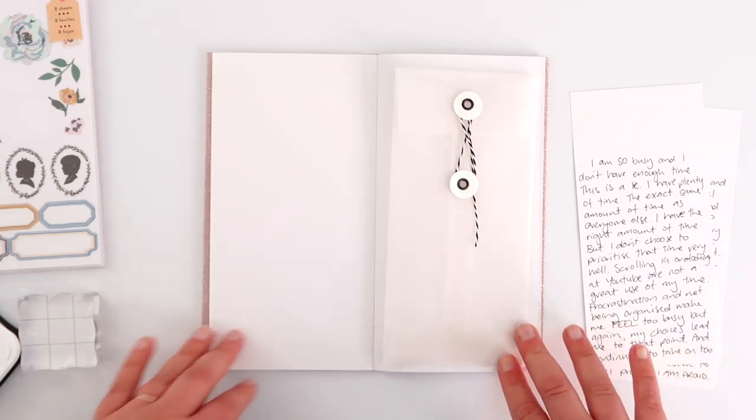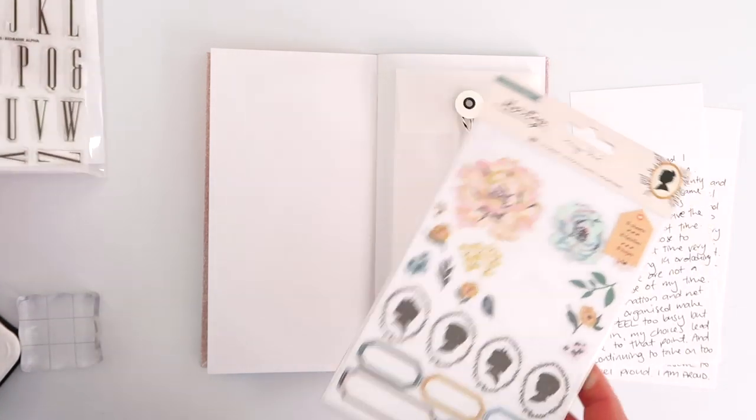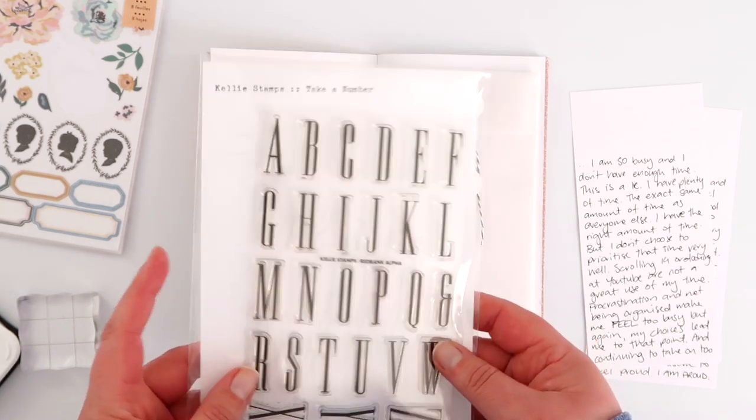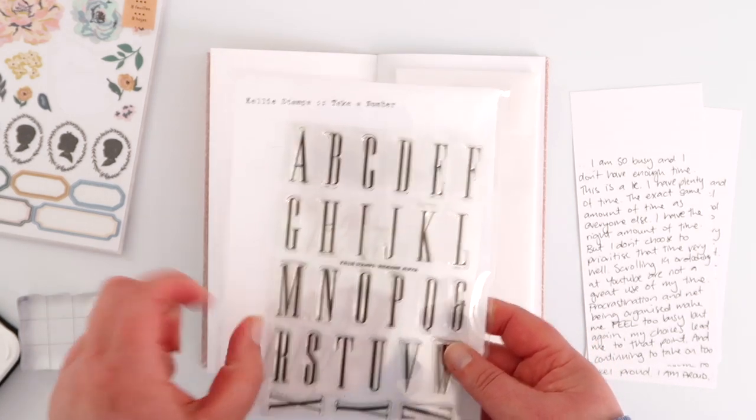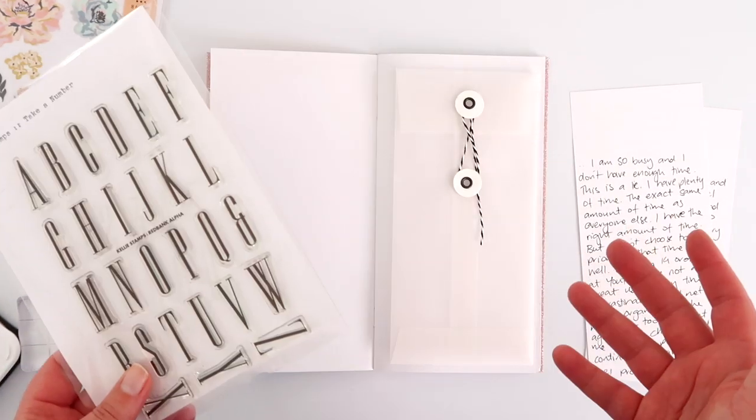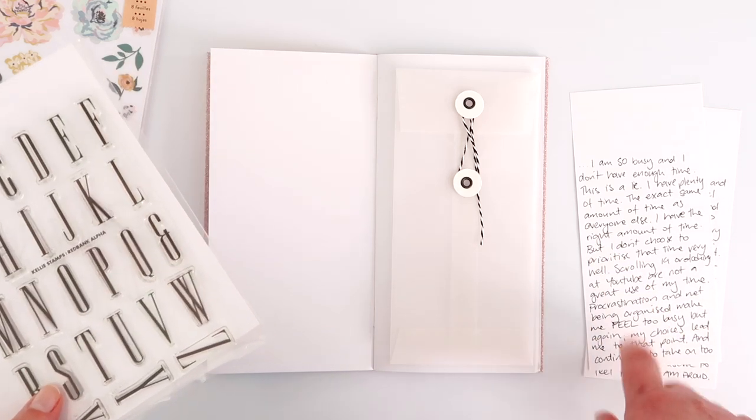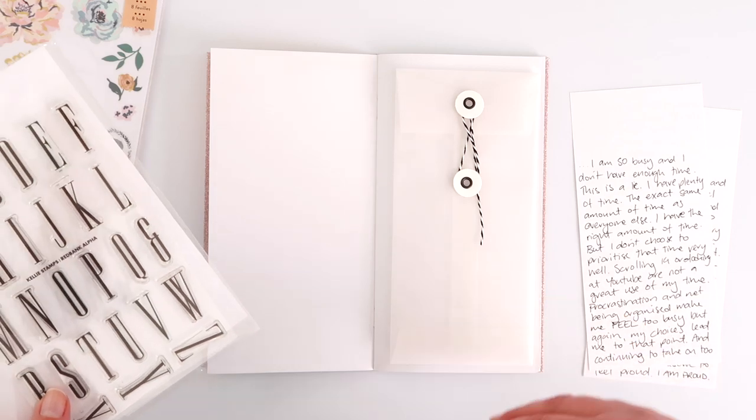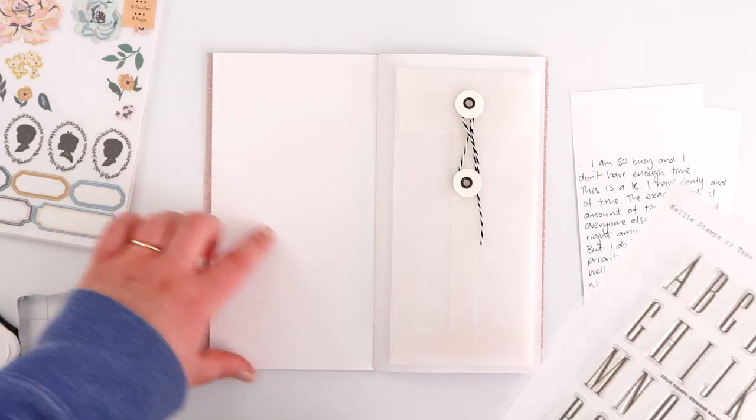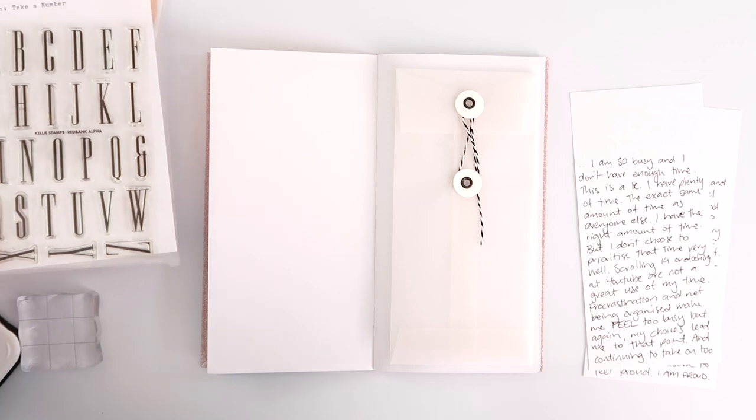So the rest of the page is going to be super simple. I might use some of these here—I'm going to see how it looks without them first. I'm going to use the Red Bank alpha from Kelly Purkey stamps because it's quite narrow. The title I want to use for this page is the same as the prompt: 'The story I am telling myself is.' I haven't decided whether I'm going to write story or stories because I do have three. So I'm going to use this and hopefully I can sort of squeeze it on here. I'll just have to see how I go. I haven't planned this out—hopefully that won't take too long.